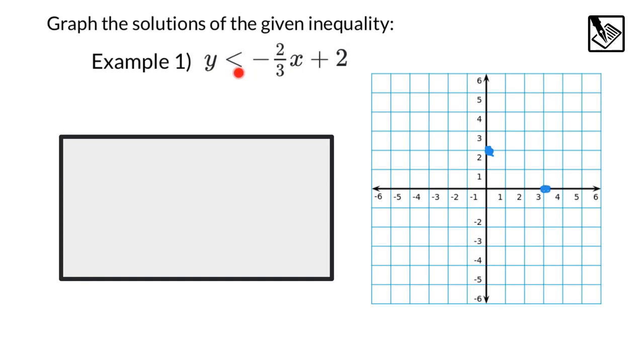Now notice that this is less than. It does not have the line underneath, meaning we want to use a dotted line, meaning points on this line are not part of the solution. So when we graph this line, I'm going to make it a dotted line or a dashed line. And that tells me that none of these points on the line will work. So with this line, we know that the solutions are either going to be above the line or below the line.